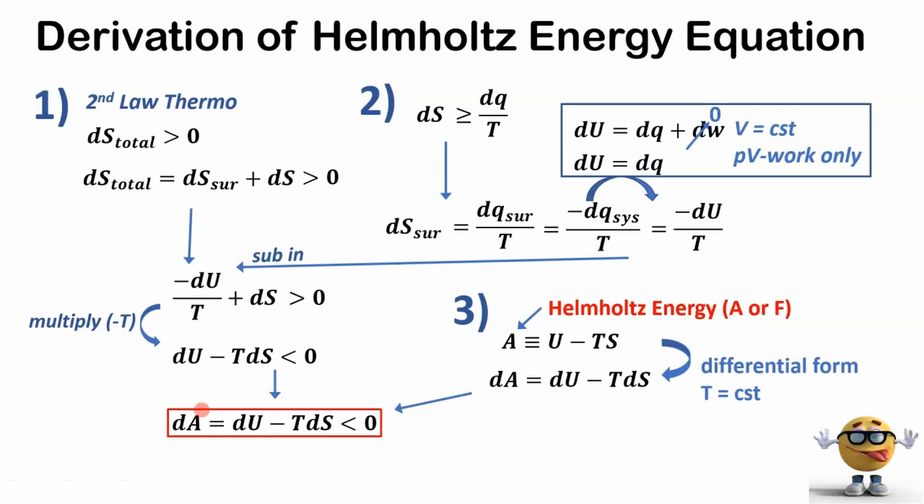So our Helmholtz energy equation, dA equals dU minus TdS, and this has to be less than zero for the process to be spontaneous. If dA is negative, the process is spontaneous, and that's for a process that occurs under constant volume, constant temperature, allowing pressure volume work only, so only expansive work, and in a closed system.